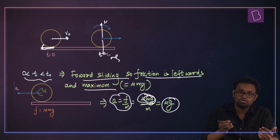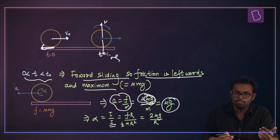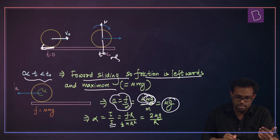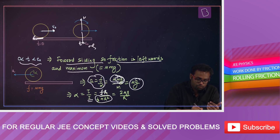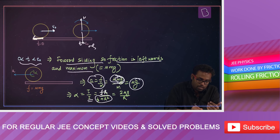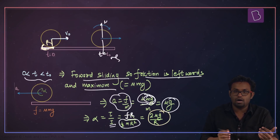This friction force will also create a torque. That torque equals Iα, so α equals torque divided by I. The moment of inertia of a disk is (1/2)mr². The torque is the friction force times r. So α becomes 2μg/r. This is the α value and μg is the a value.